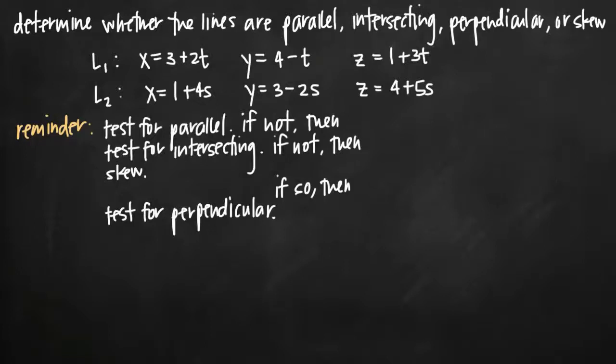Today we're going to be talking about how to determine whether two lines are parallel, intersecting, perpendicular, or skew lines. In this particular problem we've been given two lines, L sub 1 and L sub 2.